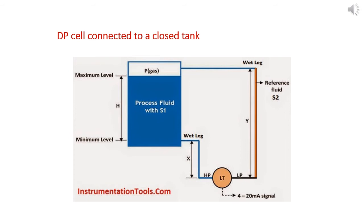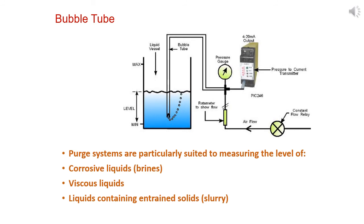Another type is bubble tube, mainly used for corrosive liquids. It's an indirect method. The system works by connecting an empty tube to the liquid, and inert gas enters through the tube down into the liquid. The back pressure is converted to liquid level. When there is no level, there is no back pressure and the pressure gauge reads zero. When the level increases, the back pressure increases and is converted to equivalent level. Purge systems are particularly used for measuring level of corrosive liquids, viscous liquids, and liquids containing solids like slurries.